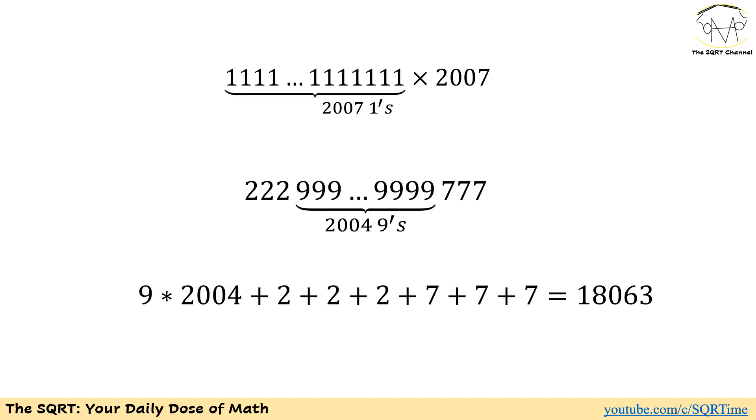With that, now we can say that the pattern is we are going to have 3 twos on the left-hand side, 3 sevens on the right-hand side, and a bunch of 9s in the middle. But how many 9s are we going to have?